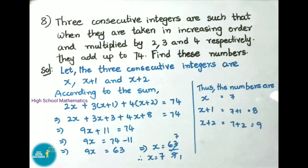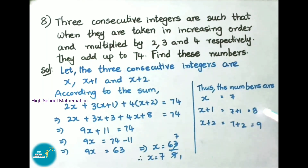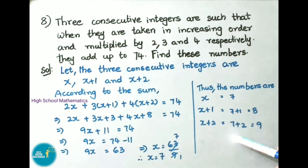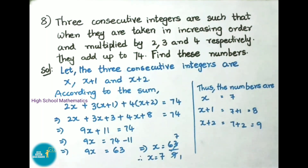Thus the numbers are: x is 7, x plus 1 is 7 plus 1 which is 8, and x plus 2 is 7 plus 2 which is 9. Therefore the 3 consecutive integers are 7, 8 and 9.